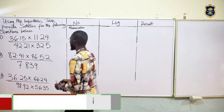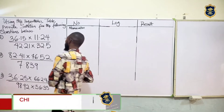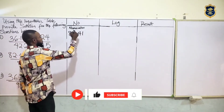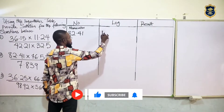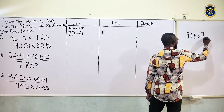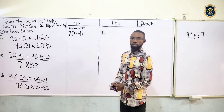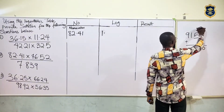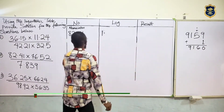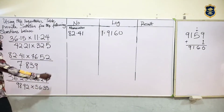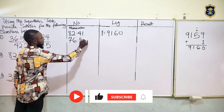Alright guys, let's look at question number 2 on the board. It says find using the logarithm table the solution for this question. It's 82.41 on the numerator. So our characteristics — we move once — is 1. Let's look at log 82 under 4 on the screen. Log 82 under 4 is 9159. The difference of 1 is 1.